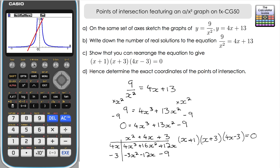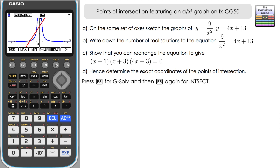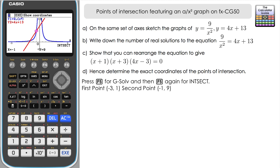Part d says 'hence determine the exact coordinates of the points of intersection.' We'll find the solutions on the calculator first, then show the algebraic working. Press F5 on the graph screen and select Intersect. The first point of intersection is x equals minus 3, y equals 1 — so (minus 3, 1). Navigate right for the next: x equals minus 1, y equals 9 — so (minus 1, 9). Navigate right again for the last: x equals 0.75 (three quarters), y equals 16.